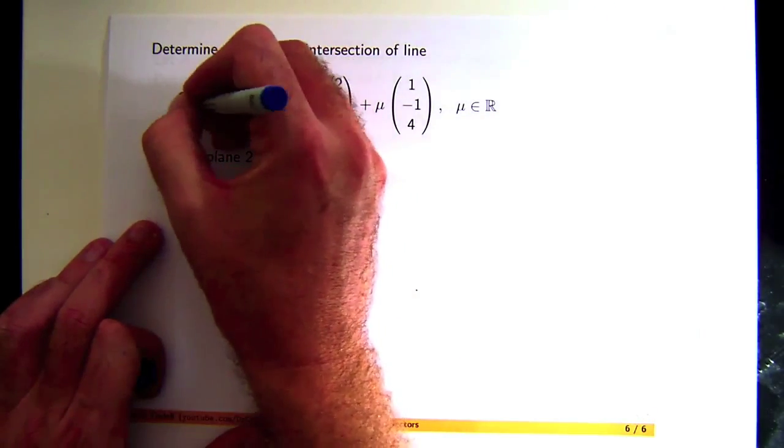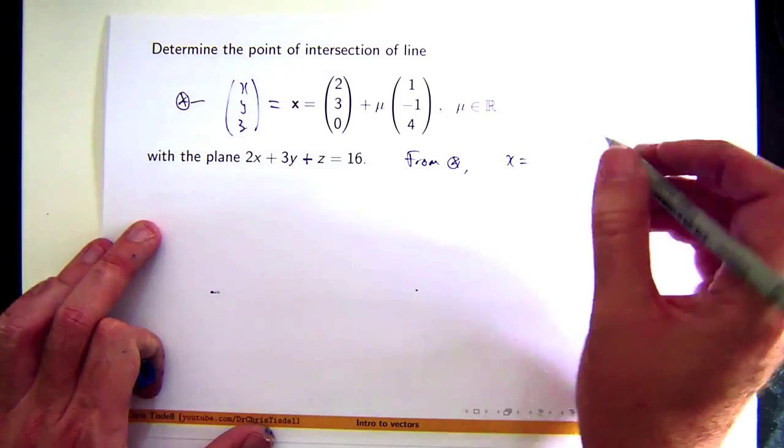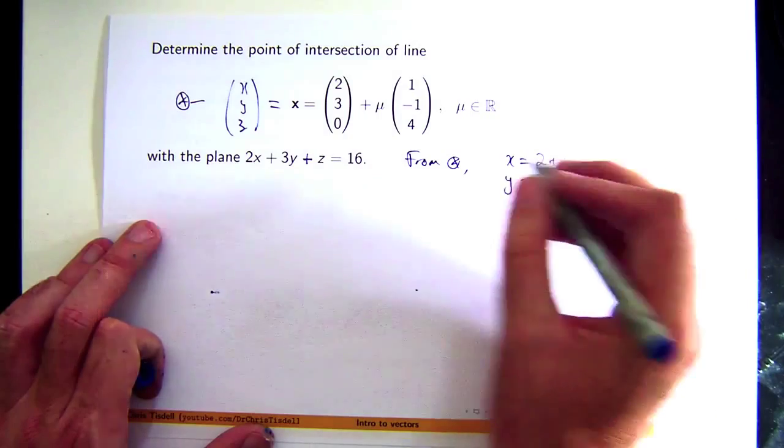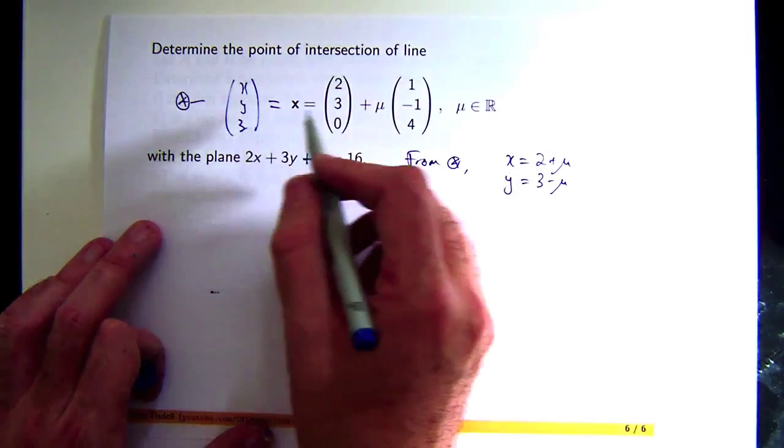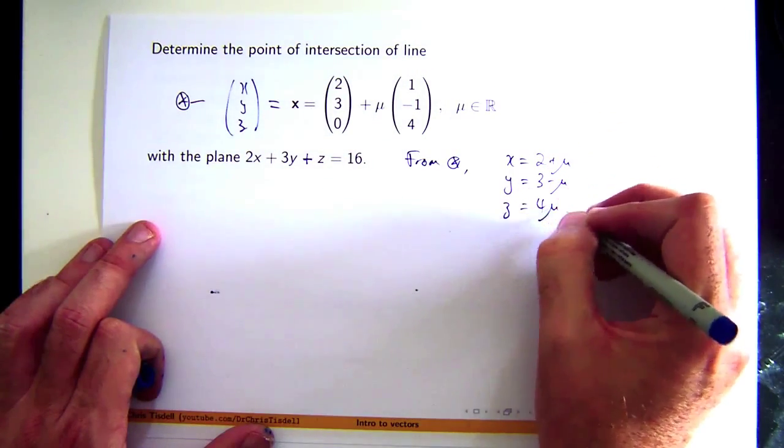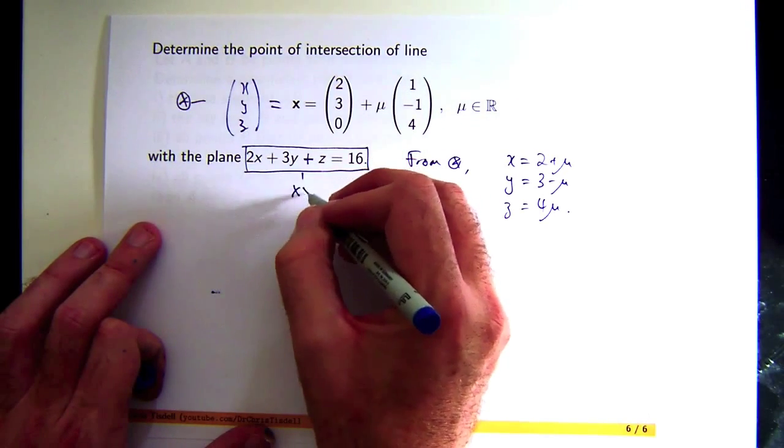So from star, x equals two plus mu, y equals three minus mu where mu is the parameter, and z is four mu. So let's call this, you guessed it, double star.